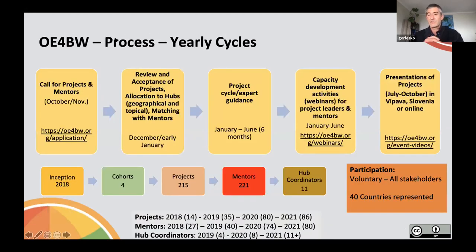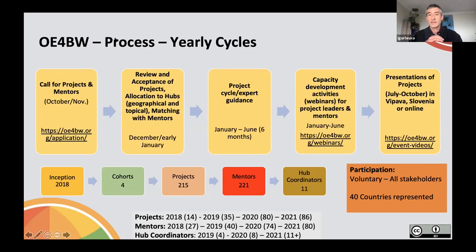The program itself is organized in yearly cycles. In October and November each year, we launch a call for applications — both for projects and for mentors. We then review the applications, and if they are accepted, they are allocated into different hubs, which can be both geographical and topical. Project leaders are then matched with mentors, typically around the December to early January timeframe. The actual project cycle then starts from January to June each year, over a period of six months.